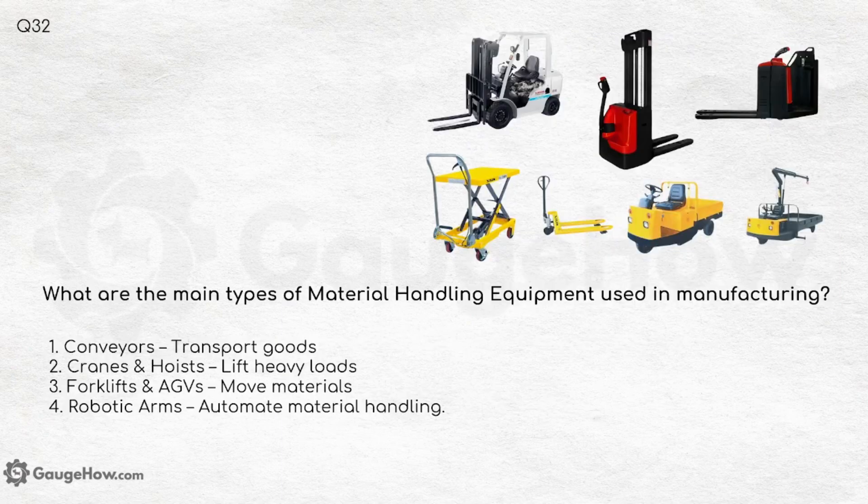What are the main types of material handling equipment used in manufacturing? Conveyors for transporting goods, cranes and hoists for lifting heavy loads, forklifts and AGVs for moving materials, and robotic arms for automating material handling.